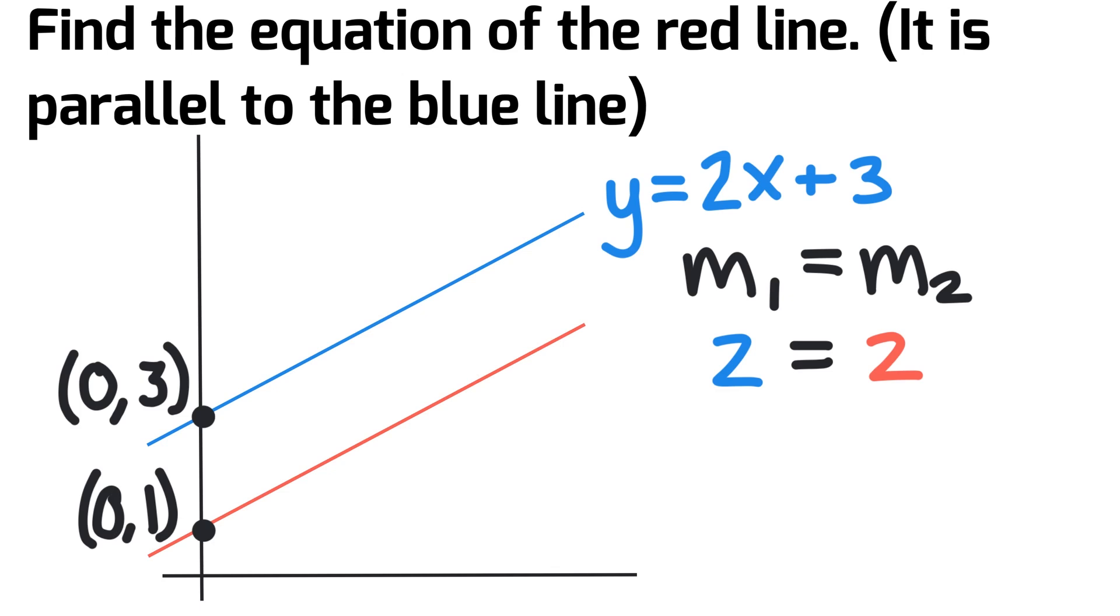The next step is to solve for the y-intercept. When we look at the y-intercept, that's represented by the symbol B. In the blue line, the y-intercept is 3, to where it crosses the y-axis.